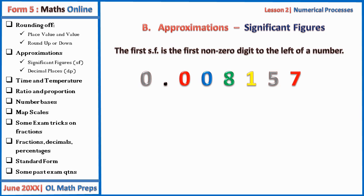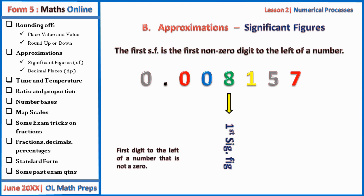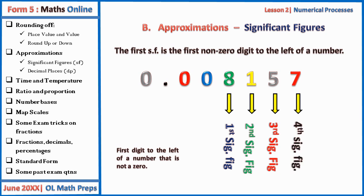Let's take for example this number. The first non-zero digit in this number is eight, so the first significant figure or digit is eight. The second significant digit or figure is one. The third significant figure or digit is five, and the fourth is seven.